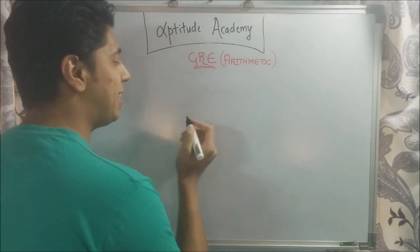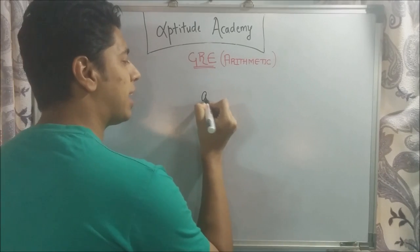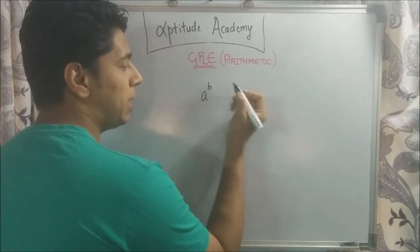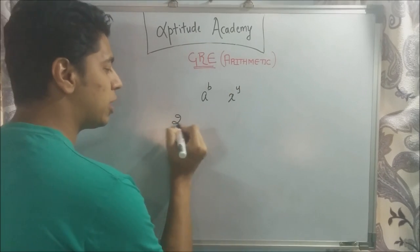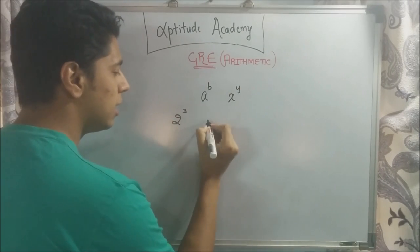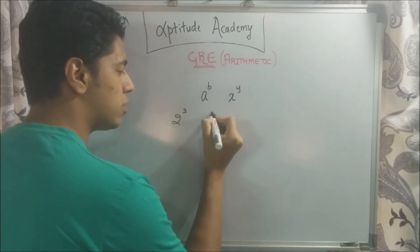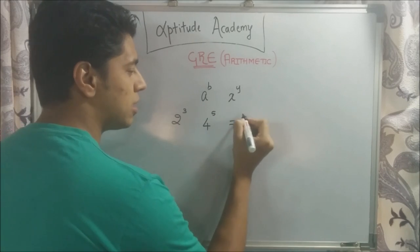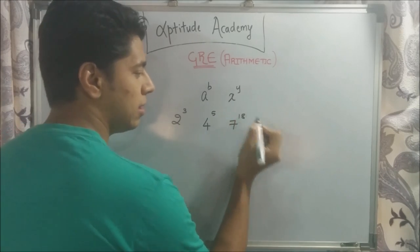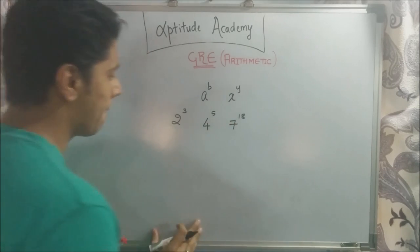This chapter basically deals with numbers that look like this: A raised to B, X raised to Y, or something like 2 raised to 3, 4 raised to 5, 7 raised to 18, and something like this.